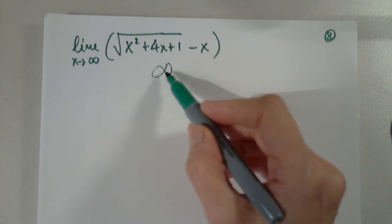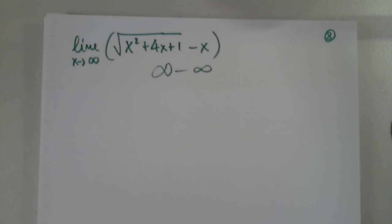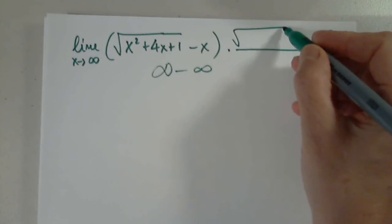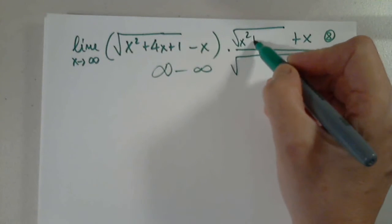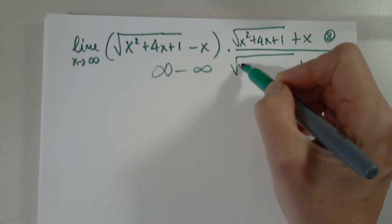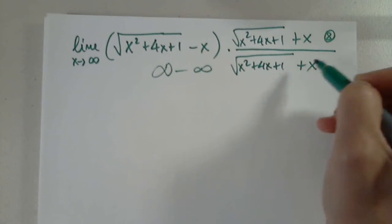And this is an indeterminate case, infinity minus infinity, which is not a friendly situation really, because I need to rationalize. So this is the square root plus X and the square root plus X of X squared plus 4X plus 1.